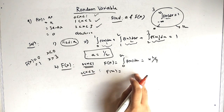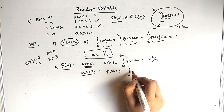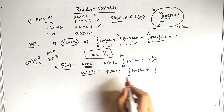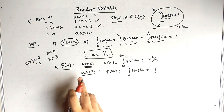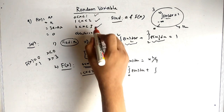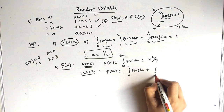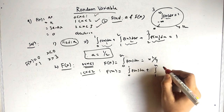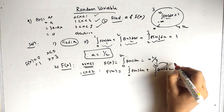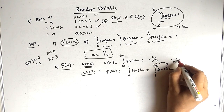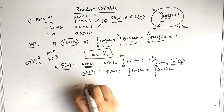For the second domain, x in [1,2]: we add the previous result. So F(x) = integral from 0 to 1 of f(x) dx, plus integral from 1 to x of f(x) dx. We use x as the upper limit because we always want the equation expressed in terms of x.